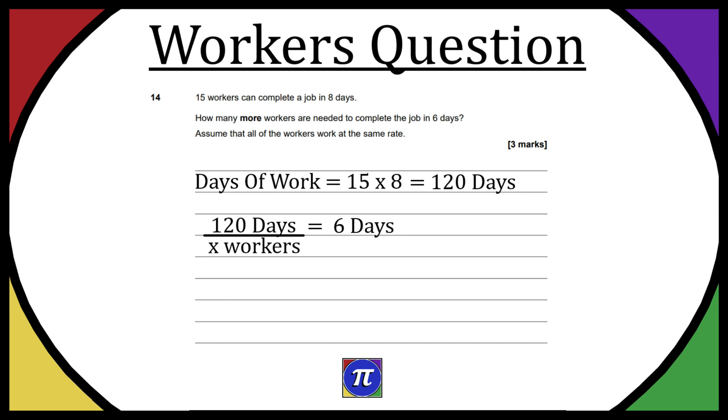If you have an equation like this, you can actually swap those two around—the 6 days and the X workers—because you're basically multiplying both sides by X workers and dividing both sides by 6 days. It ends up swapping places. So 120 days over 6 days equals X workers. That's equal to 20 workers because 120 divided by 6 is 20. So we need 20 workers to get it done in 6 days.